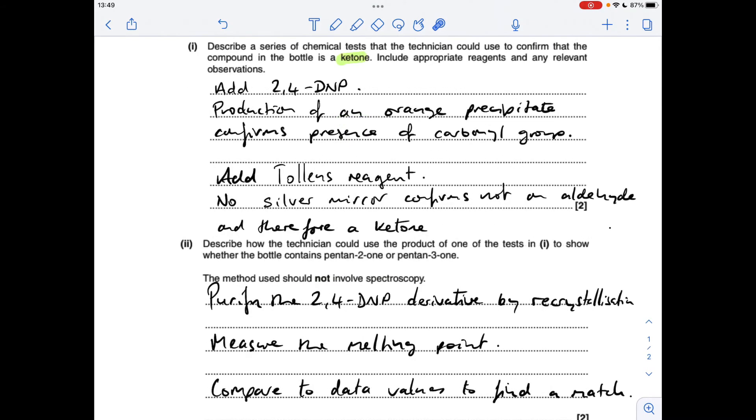So now we've confirmed it's a ketone, how do you show which ketone it is? The way we do that without using spectroscopy is we purify the 2,4-DNP derivative by recrystallization, we take the melting point of the derivative, and we compare that melting point to data values to find a match.